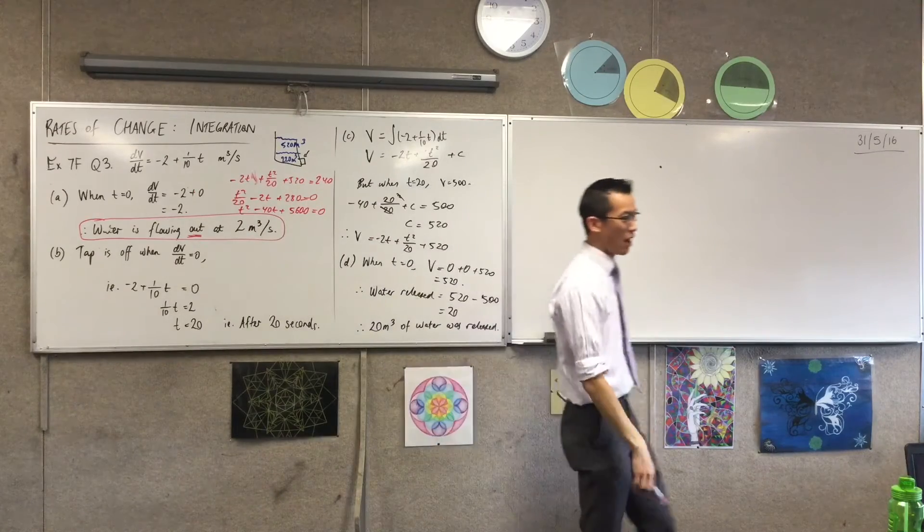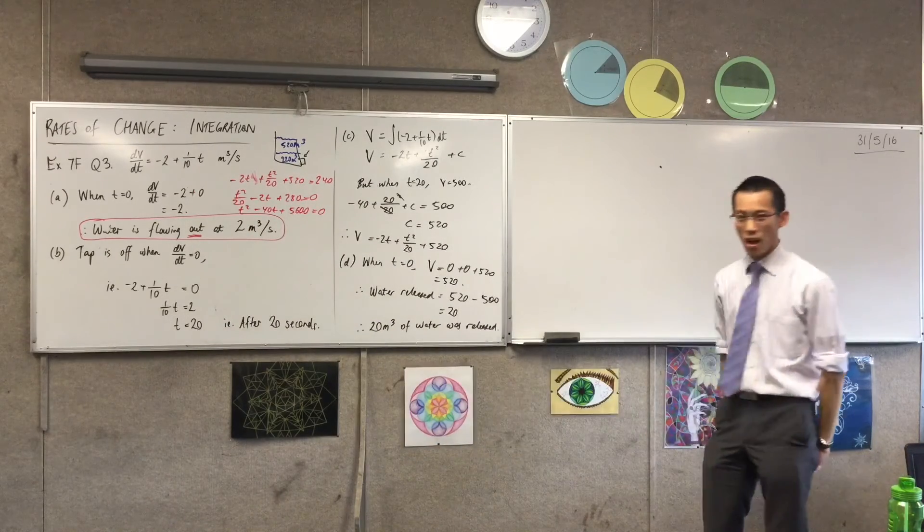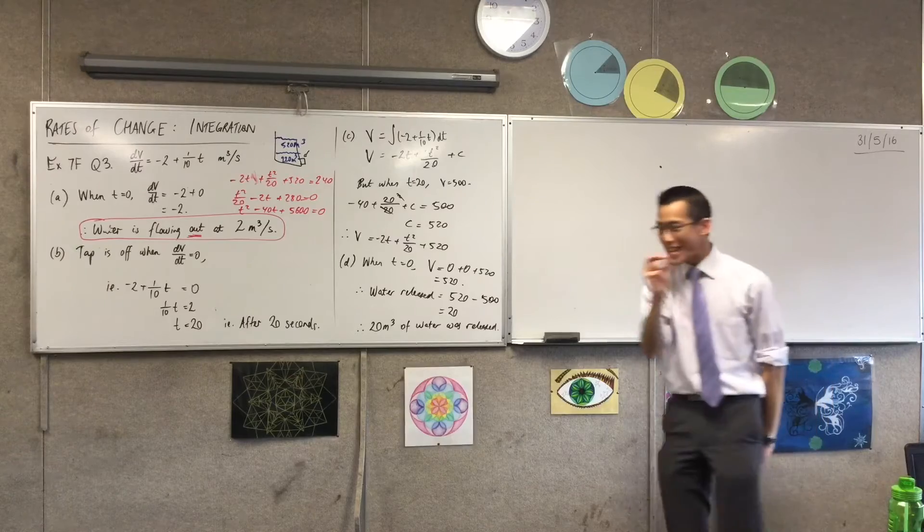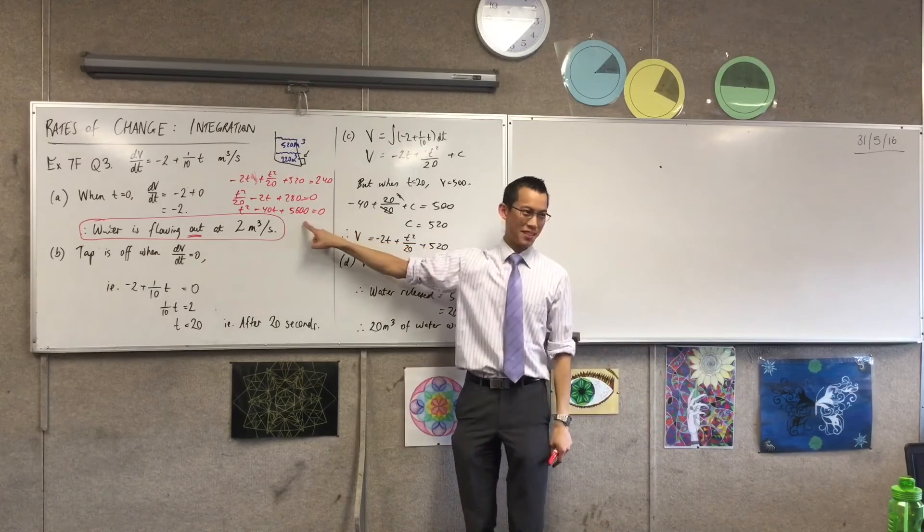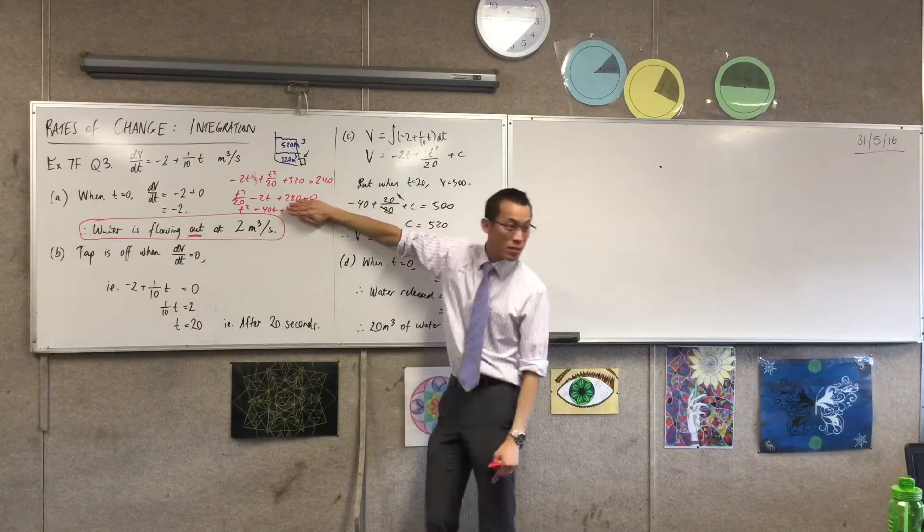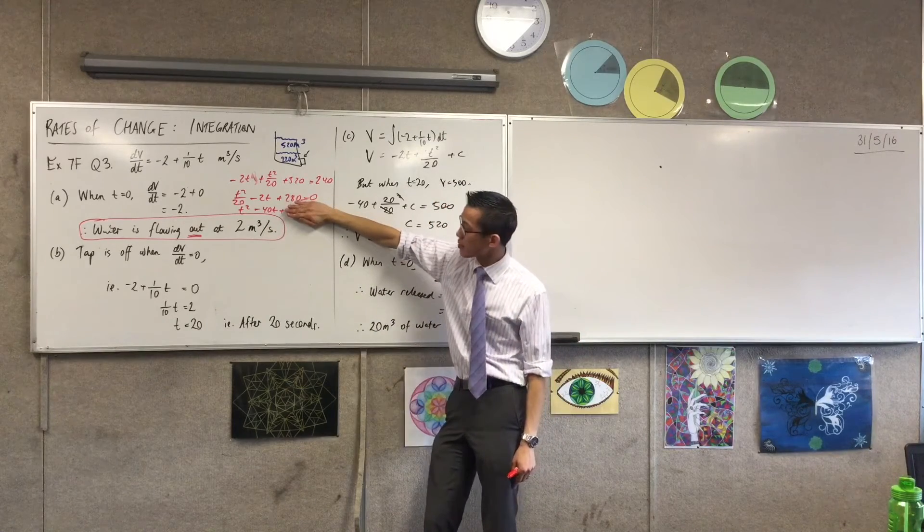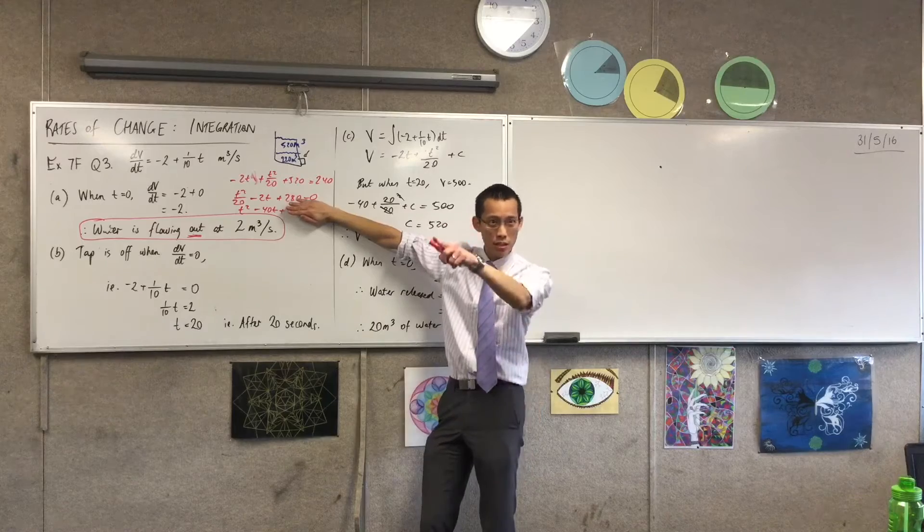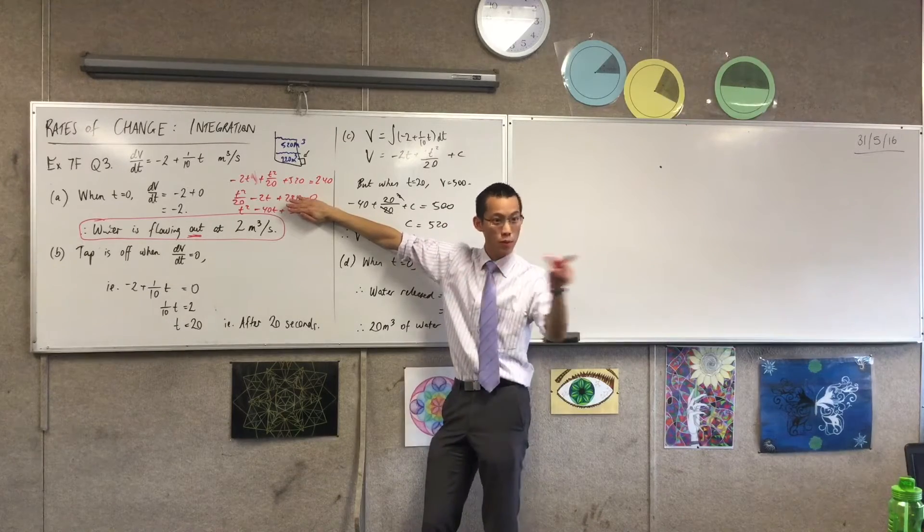Now just pause for a second. I'm not asking you to solve this. I just want you to think about this equation and what your spider sense tells you, right? Now we know, like if you graph this, okay? If you graph this, you're like, okay, I've got my roots here and here. Zero and 40. Yeah.